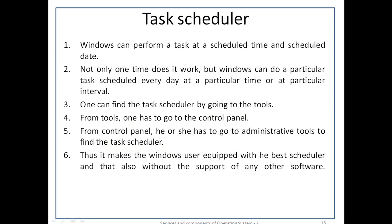Windows can perform a task at a scheduled time and date — not just once, but repeatedly every day at a particular time or interval. One can find the task scheduler by going to tools, then the control panel, then administrative tools. This makes the Windows user equipped with a built-in scheduler without the support of any other software.